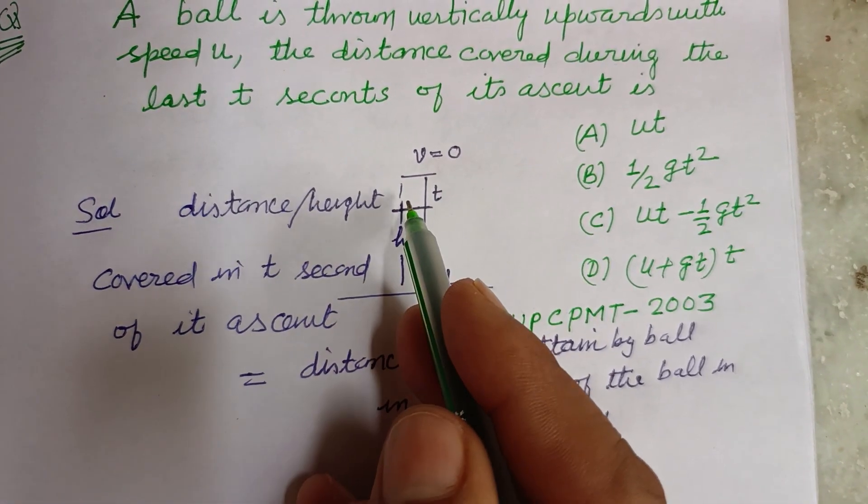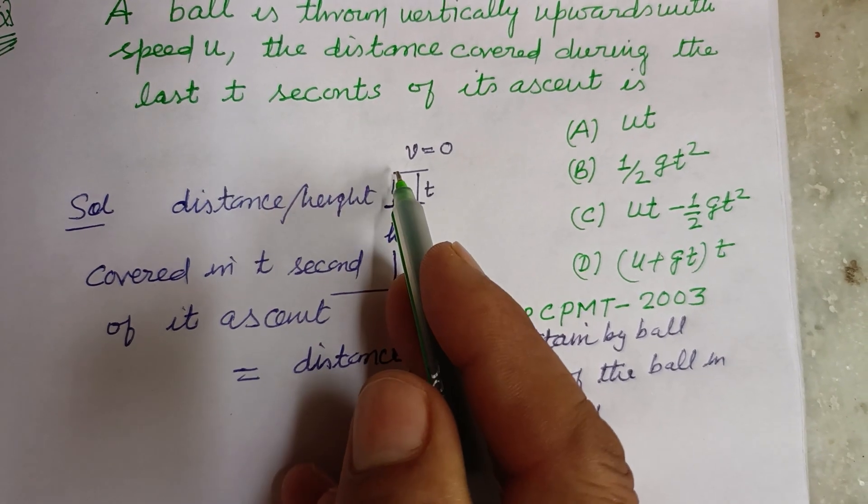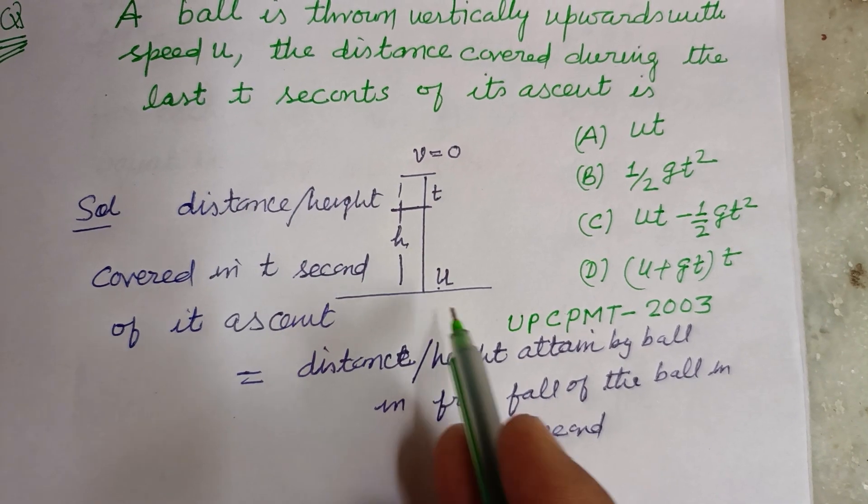So the ball attains the same height while it is rising in t seconds or while it is going downward in t seconds.